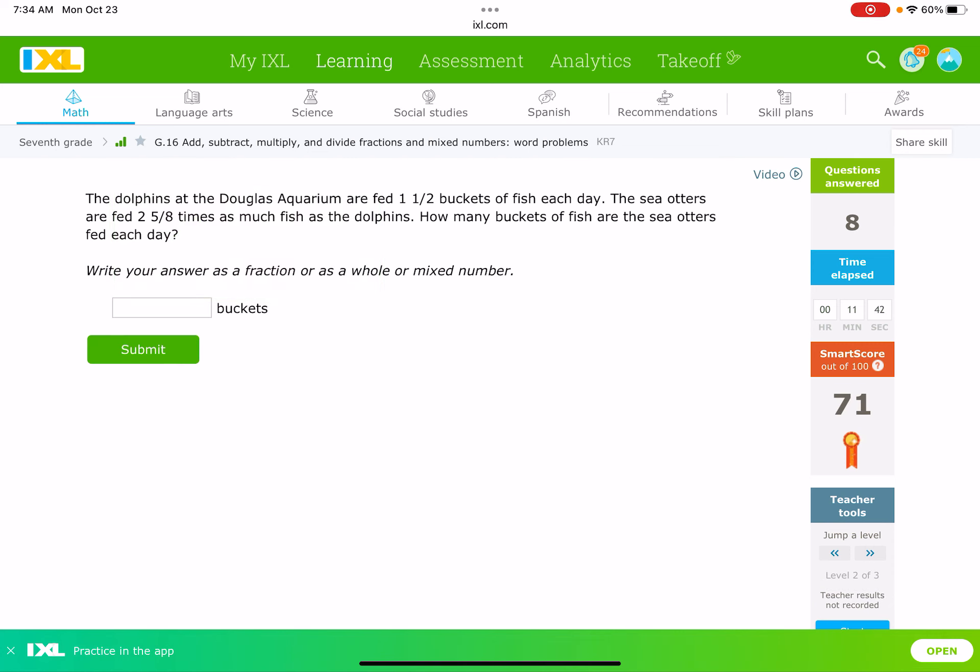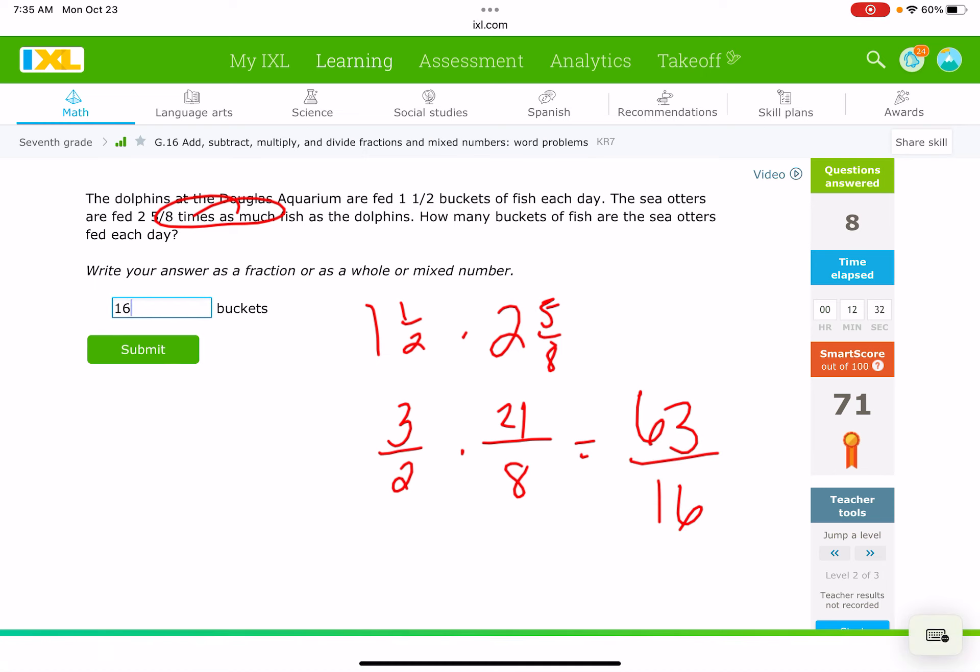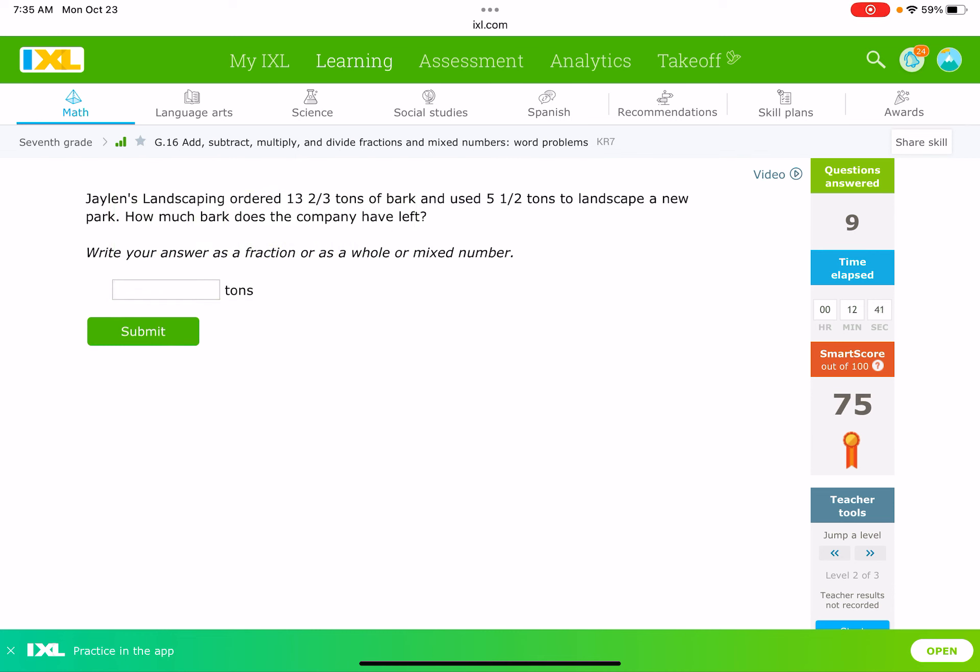The dolphins at the Douglas Aquarium are fed 1½ buckets of fish each day. The sea otters are fed 2⅝ times as much. How many buckets are the sea otters fed each day? We're going to do times here. We're going to multiply. So, we're going to do 1½ times 2⅝. Students are coming in, so I've got to do this quickly. So, 1½ is the same thing as ³⁄₂. Let's do 2 times 8, 16, plus 5 is 21, 21⁄8. So I'm going to simply multiply straight across. 3 times 21 is 63, and 2 times 8 is 16. And because of the sake of time, I'm just going to put in 63 over 16, and I hope I'm not wrong. And I was right. And I don't have time to do the other one, but if you need any help, don't hesitate to...